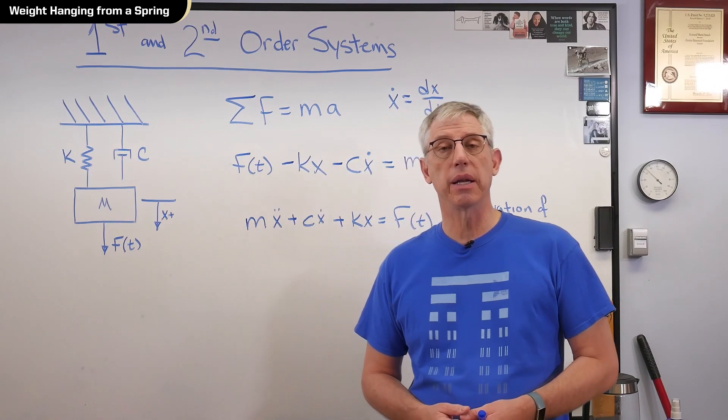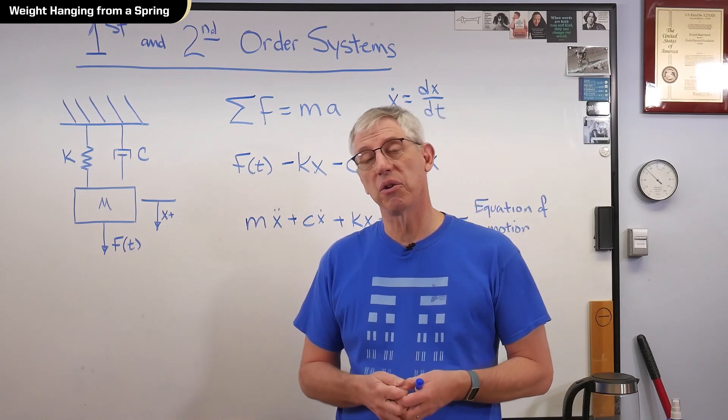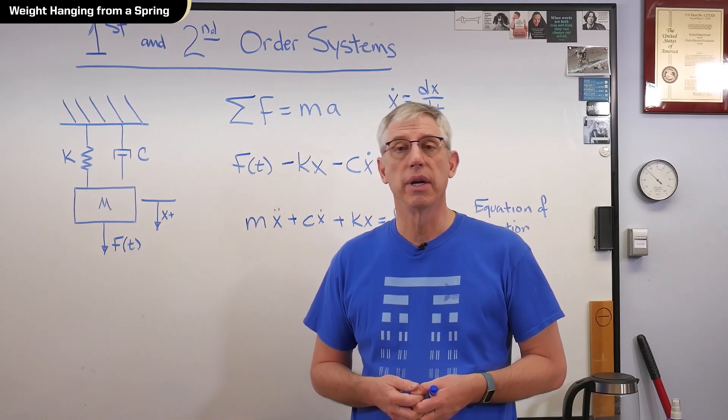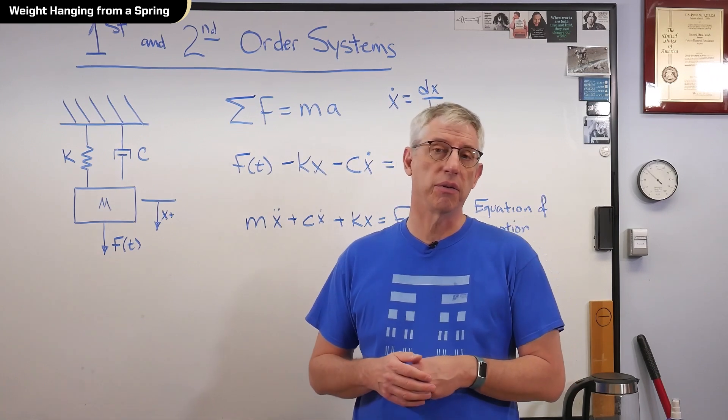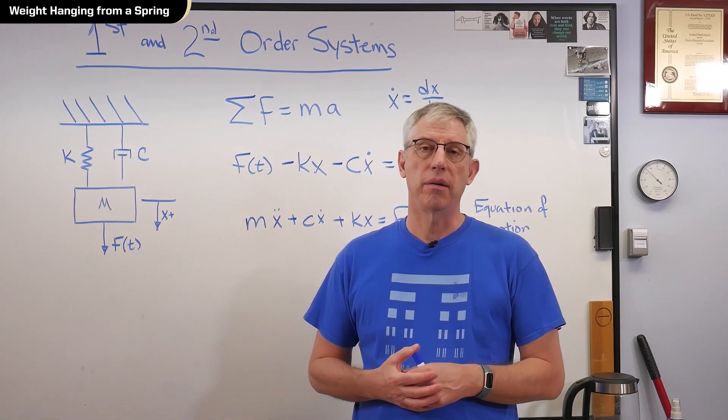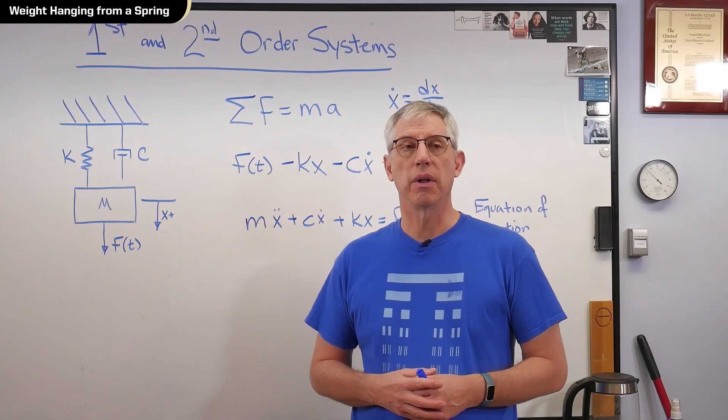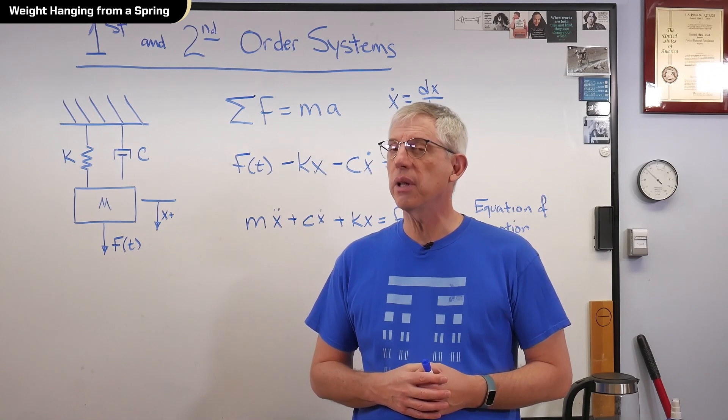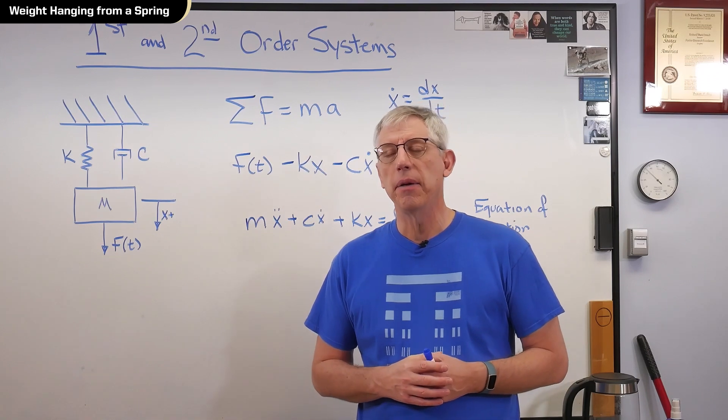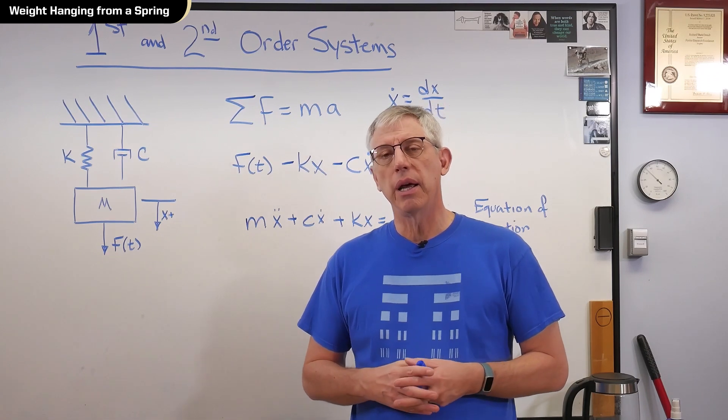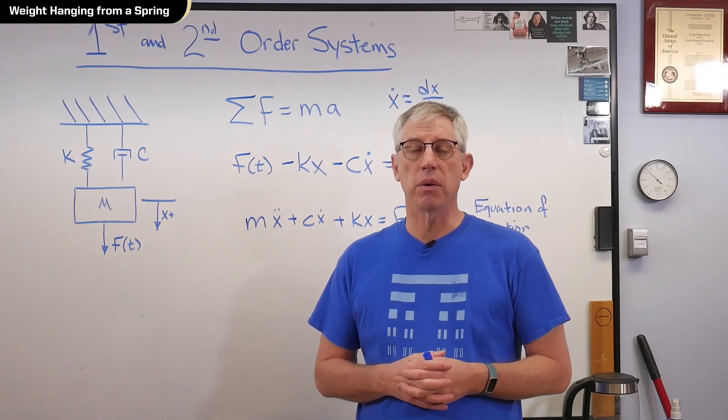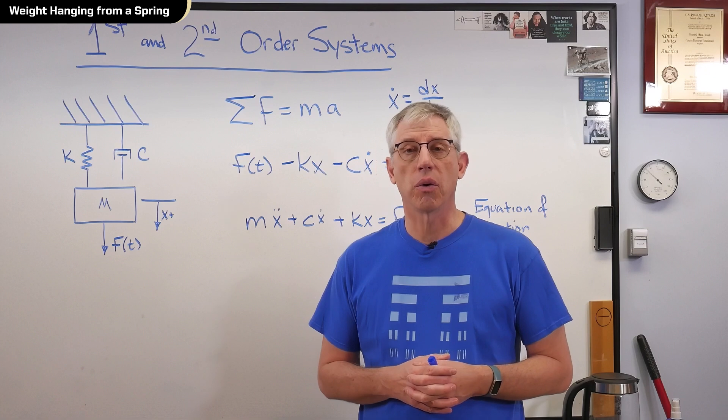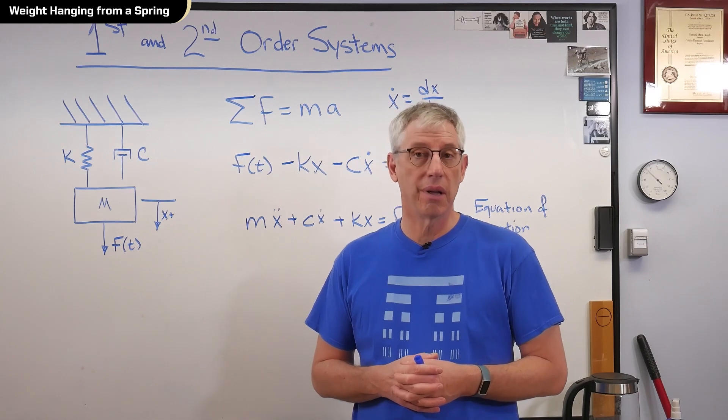And sometimes, more complicated systems will also exhibit first or second order behavior. Think of something really complicated, like a jet flying along that has a flight control system, and all the complications that go along with that. Is that strictly a first or second order system? Not really, if you go into the details. But, at a first approximation, you really can explain what's going on with first and second order linear differential equations a lot of the time.